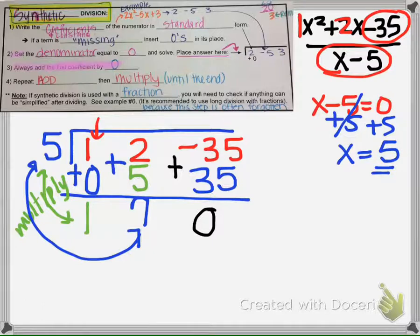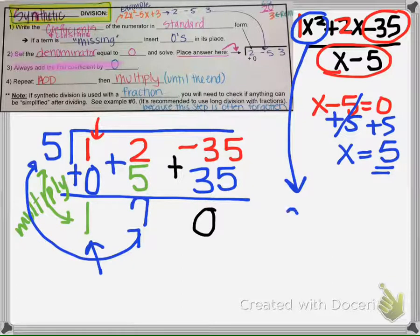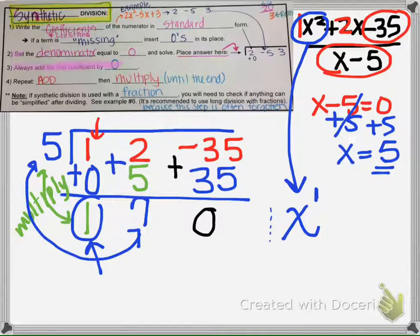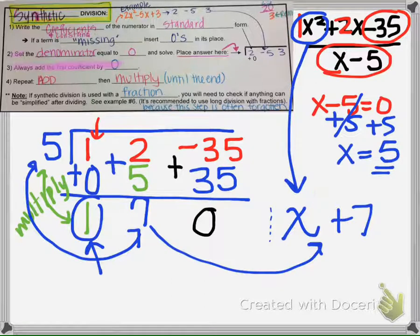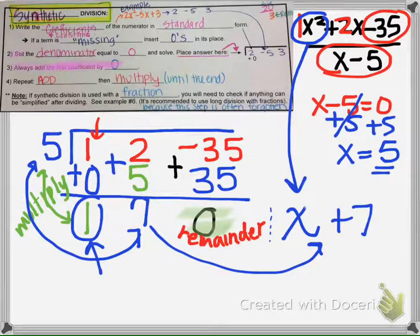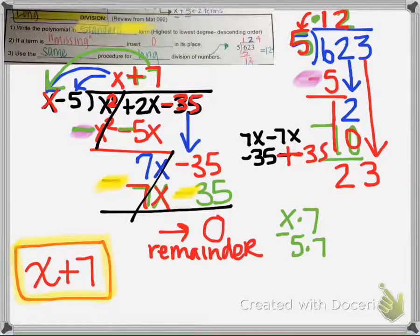Now we take these results. Since the original was x squared, this answer is 1 degree less — so this is 1x, and decreasing by 1 more gives the constant, so this is plus 7. The very last number represents our remainder, and we have a remainder of 0. Going back to the long division way, we also got x plus 7 — both methods match.